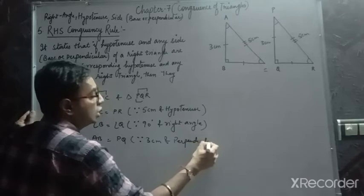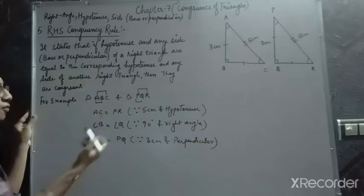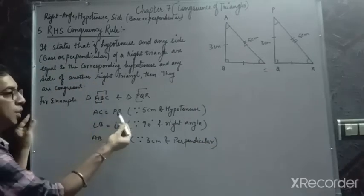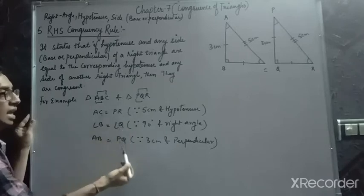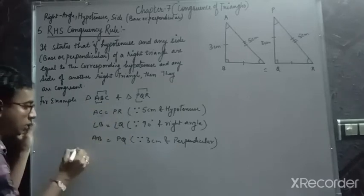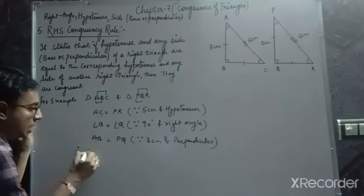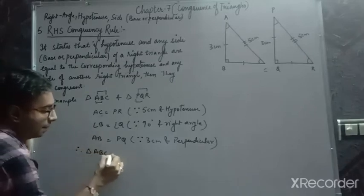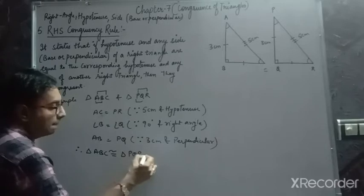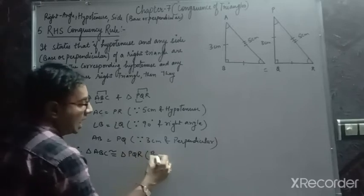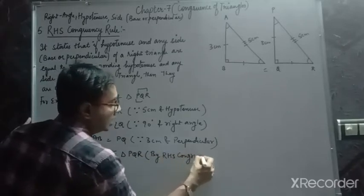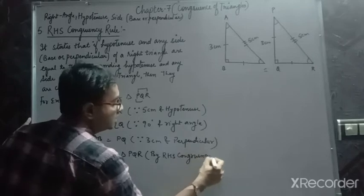So, the conditions of hypotenuse, 90°, and any side are fulfilled, and they are corresponding equal parts. Therefore, triangle ABC is congruent to triangle PQR by RHS congruence rule.